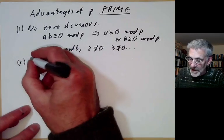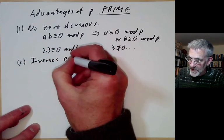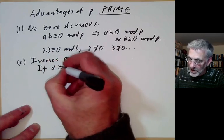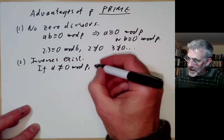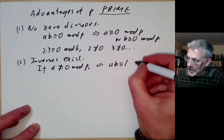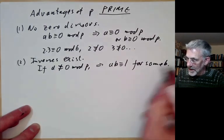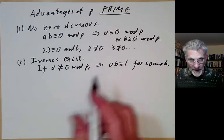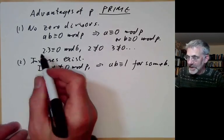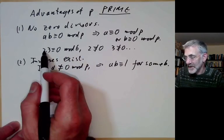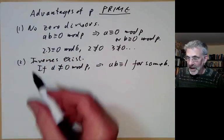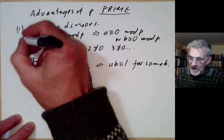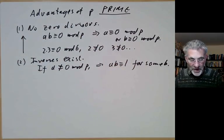The next nice property is that inverses exist, at least provided something is not zero. If a ≢ 0 mod p, then a·b ≡ 1 for some number b, and we can find b quite rapidly using Euclid's algorithm. Inverses obviously don't exist modulo 6 because 2 doesn't have an inverse, for example. These two properties are very closely related — if inverses of non-zero elements exist, this immediately implies there are no zero divisors.